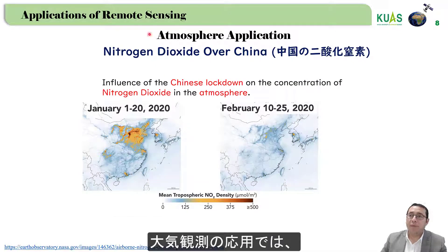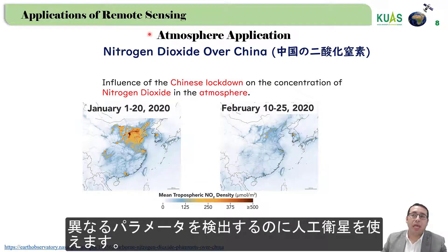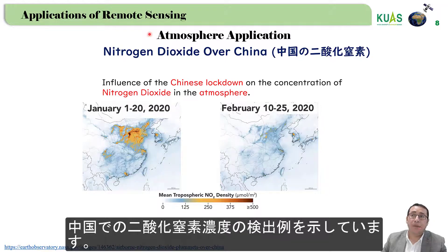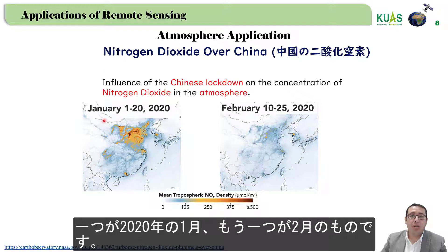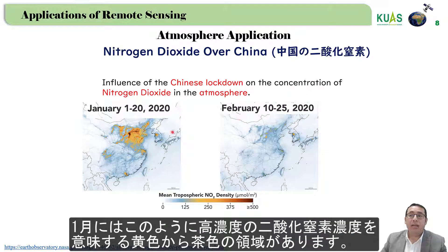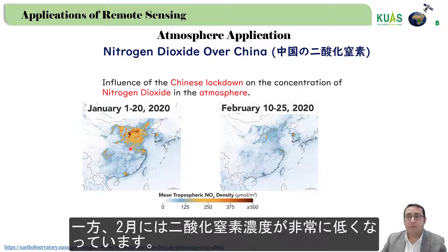For the atmosphere application, we can use satellites to detect different parameters. For example, we can detect nitrogen dioxide concentration over China. During the COVID lockdown, we collected two images: one in January and the other in February 2020. In January, we can see yellow to brown color, which means a high concentration of nitrogen dioxide. While in February, the concentration of nitrogen dioxide is very low.